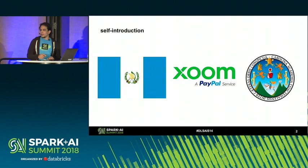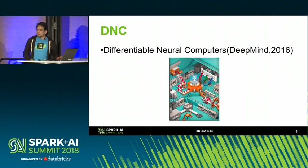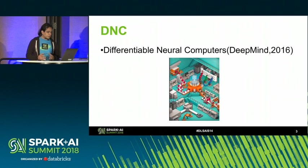Let's get started. My talk today is a little academic. It's some research I've been doing on a really recent model and paper proposed by Google DeepMind. It's called Differential Neural Computers.